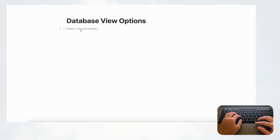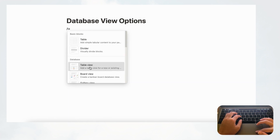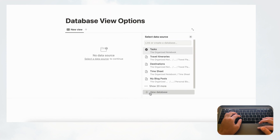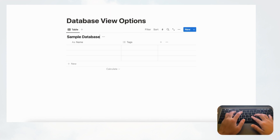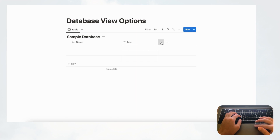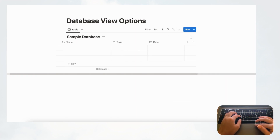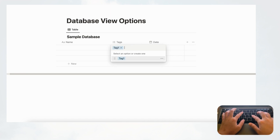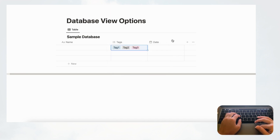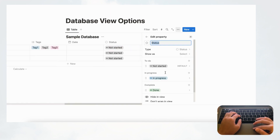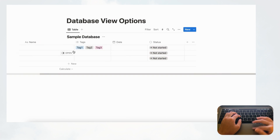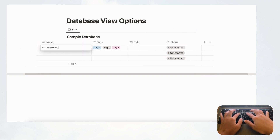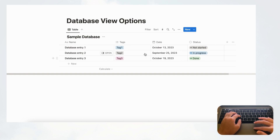First we'll show you a table view database. We'll click table view and do 'New Database', calling it 'Sample Database'. To really customize all of our database view options, we're going to add a few more properties: a date property, some tags — tag one, tag two, tag three — and a status property. Once you have some database entries filled in, we can get started with the view options.